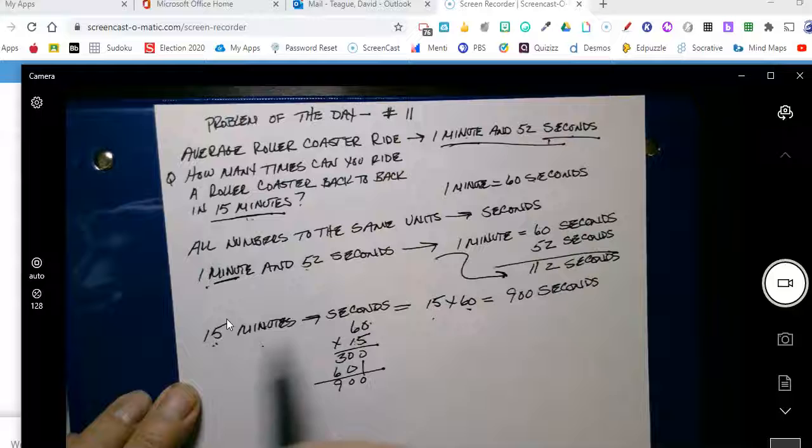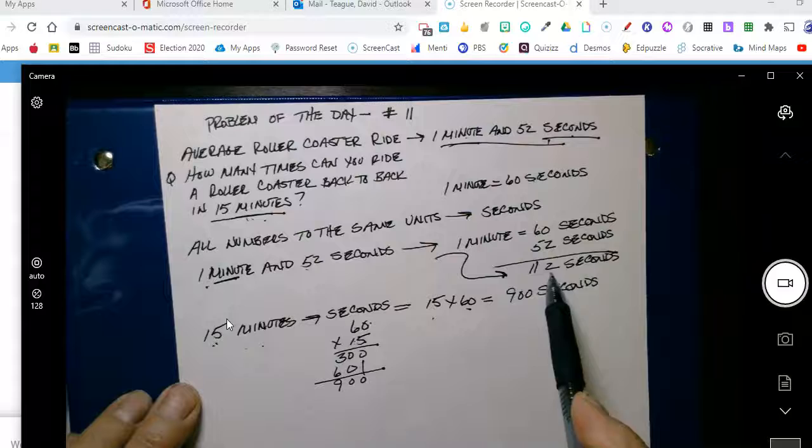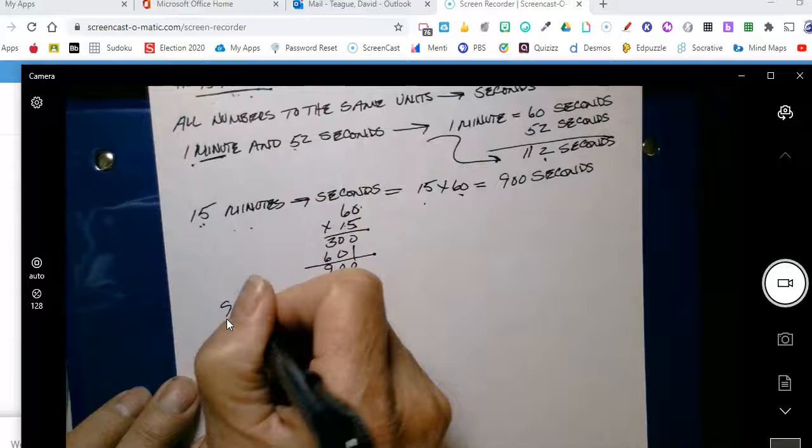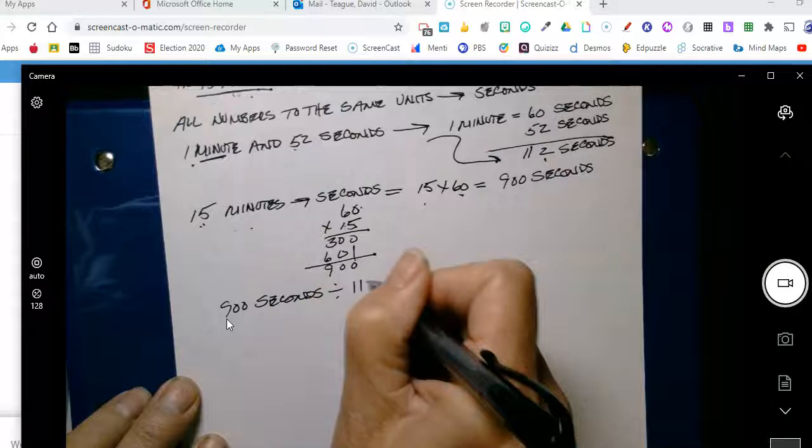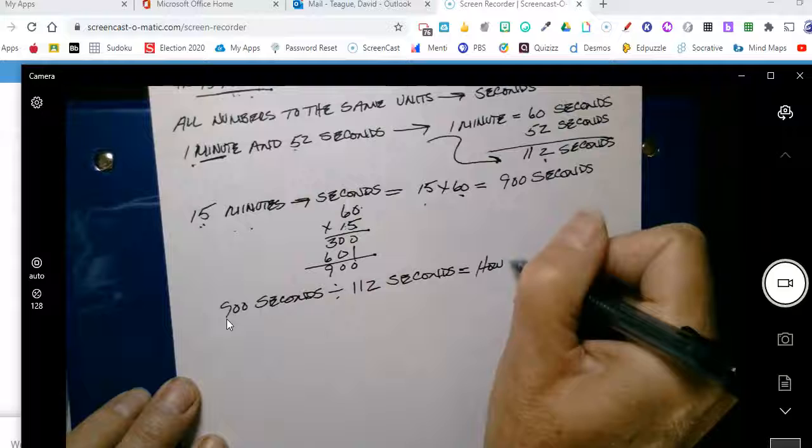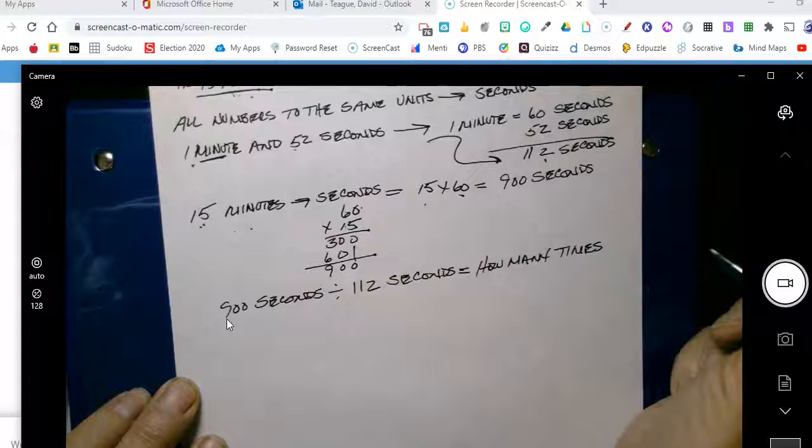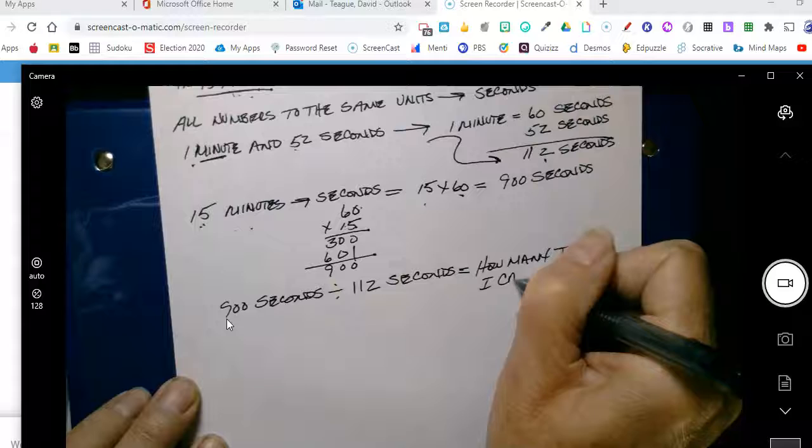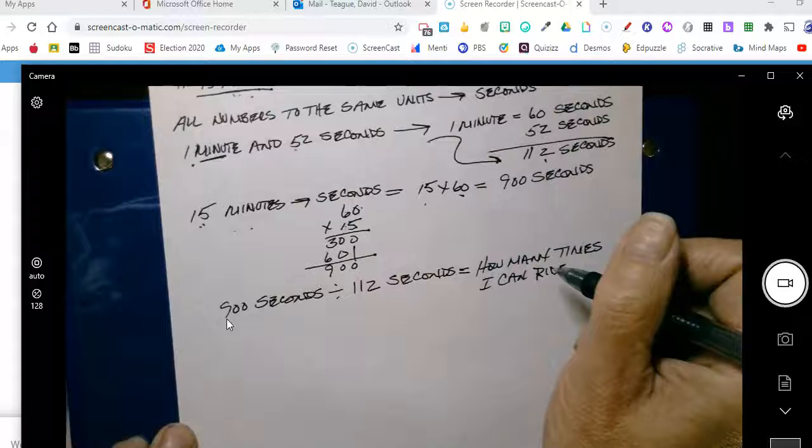Well, this is the total time that they're curious about, and I know that one ride is this, which is 112 seconds. So I need to take my 900 seconds and divide it by 112 seconds, and this will give me, this will tell me how many times I can ride.